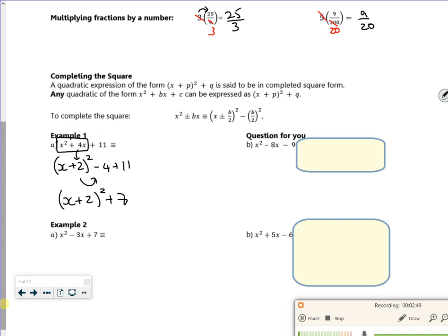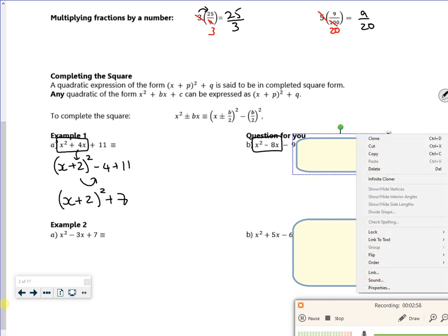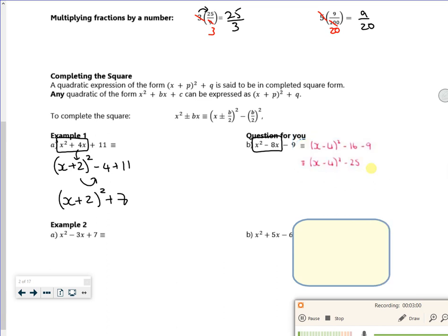There's a question for you. So same idea, hopefully. So you put the x down, half it is minus 4, then you always take away that number squared. So you always, always take away that number. So even though it's a minus, and you think, oh yeah, if I square it it's a plus, it doesn't matter, you've got that extra, so you're taking it away.